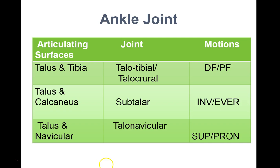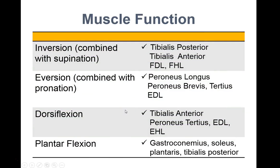As far as muscles go, especially in the ankle joint, most movements do not have just one muscle producing that action. For inversion at the subtalar joint, combined with supination, the primary muscle is tibialis posterior, but tibialis anterior, flexor digitorum longus, and flexor hallucis longus are also involved with that inversion motion.